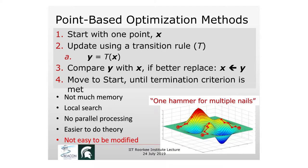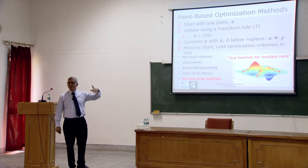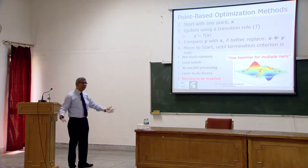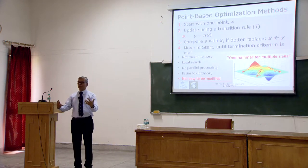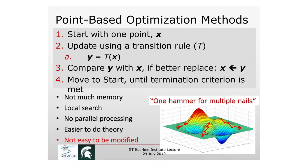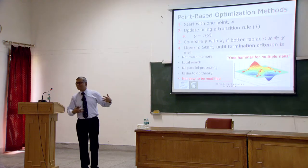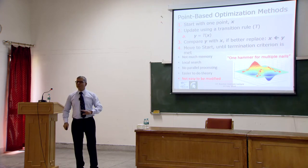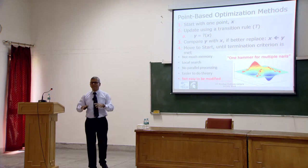A very simple algorithm for point-based optimization: start with a point x, apply a transition rule to produce y, compare y with x — if y is better, accept it; otherwise, create another point and repeat until a termination criterion is met (time limit, number of evaluations, or target solution reached). These methods don't need much memory since you only store x and y, have a local perspective, are easier to analyze theoretically, but are harder to modify, as the transition rule is fixed — typically gradient-based — and it's difficult to incorporate problem-specific knowledge.